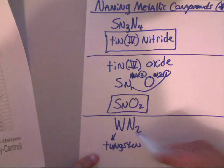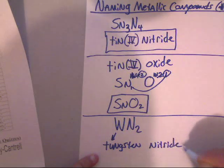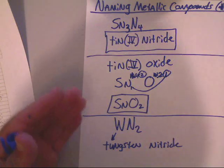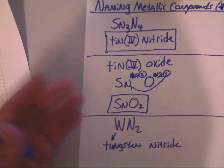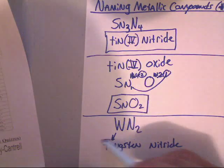And we know nitrogen is nitride. But once again, no Roman numeral is needed here because there's only one cation of tungsten. So here's the name of this one and you're done.